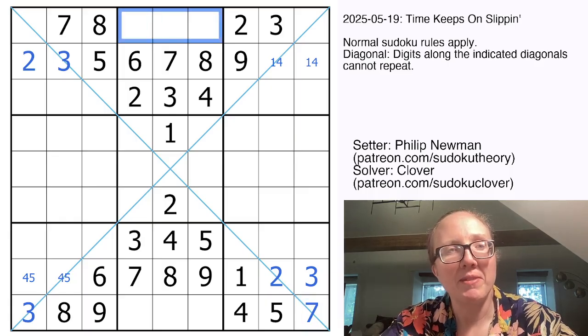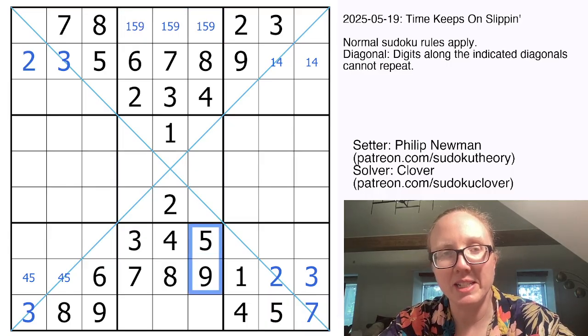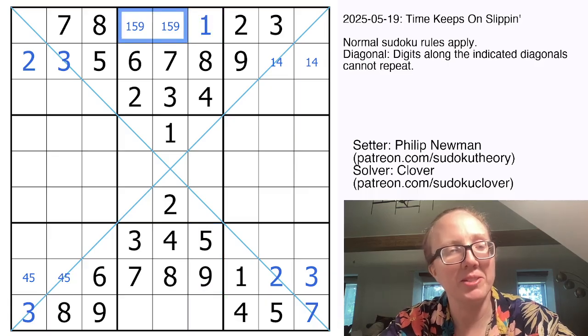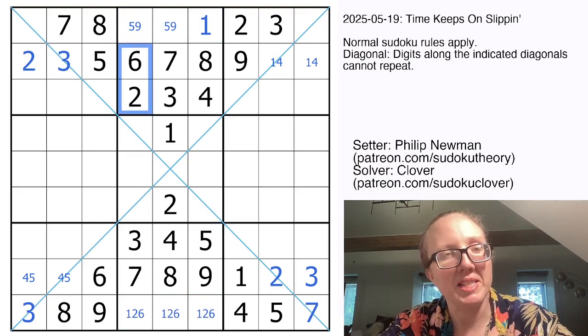Similarly, these will be 1, 5, and 9. And I actually will mark those this time because I want you to notice there's a 5, 9 here, and there's a 1 there. Actually, I can do the same thing down here because there's a 2, 6 pair here, which makes this a naked 1.